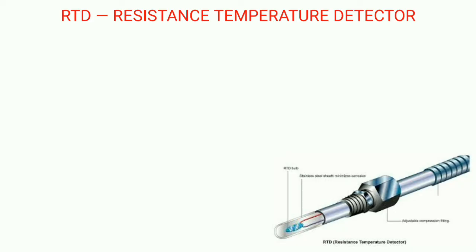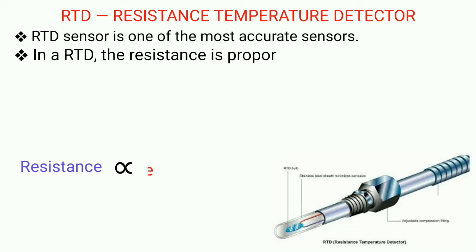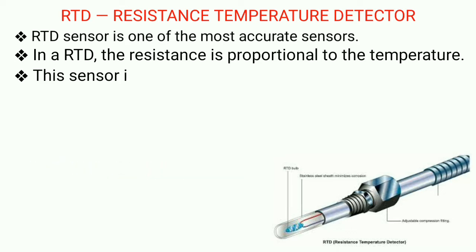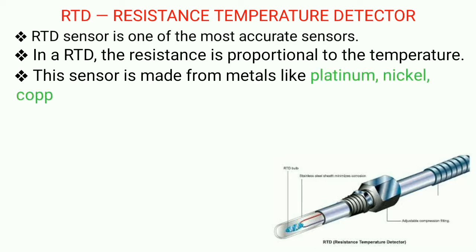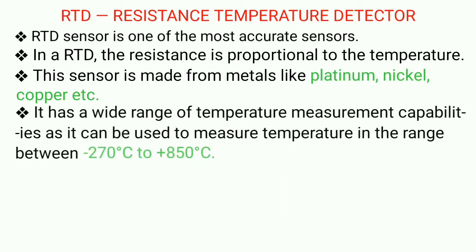Next contact sensor is RTD that is resistance temperature detector. It is one of the most accurate sensors. Here the resistance is directly proportional to temperature and it is made from metals like platinum, nickel, copper, etc.